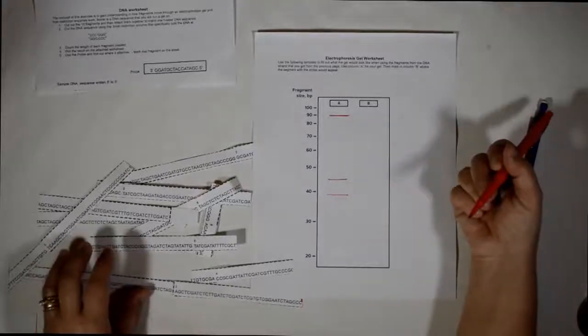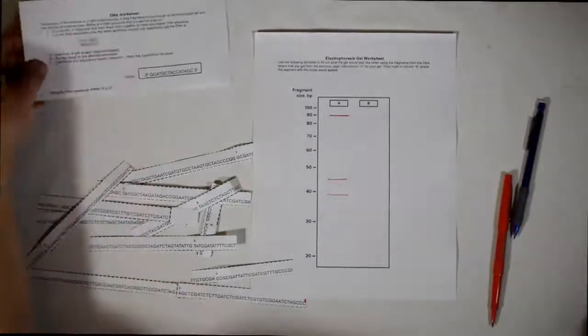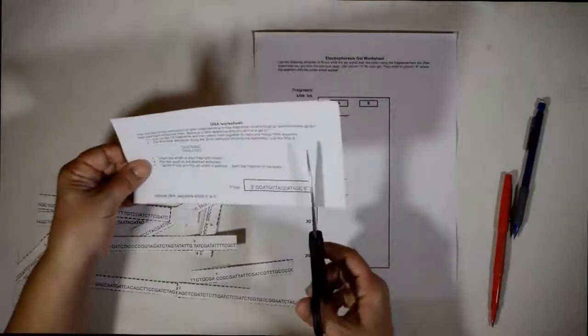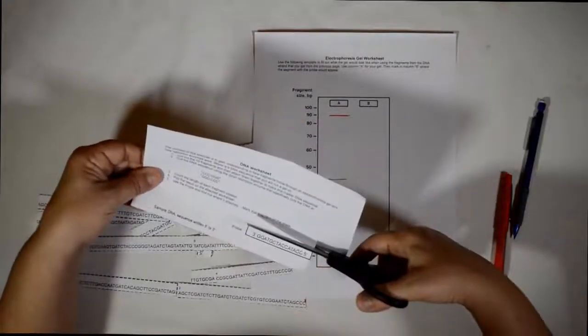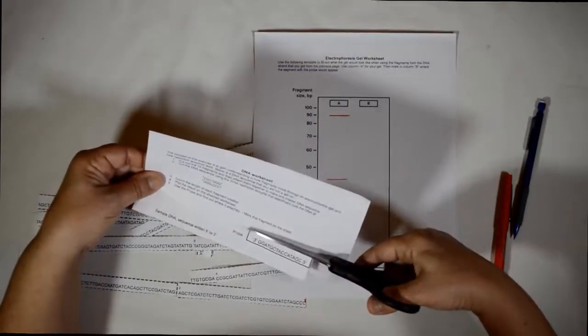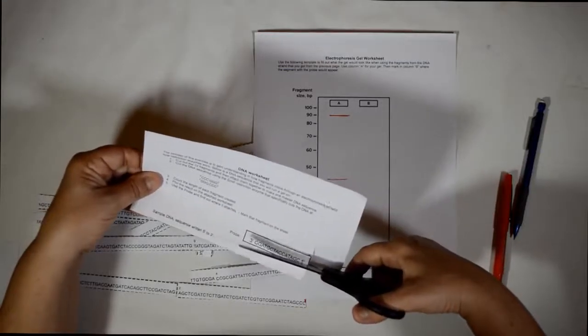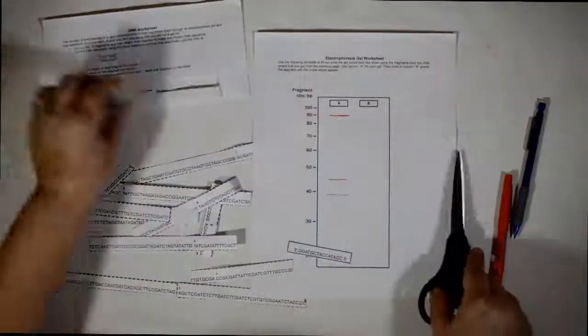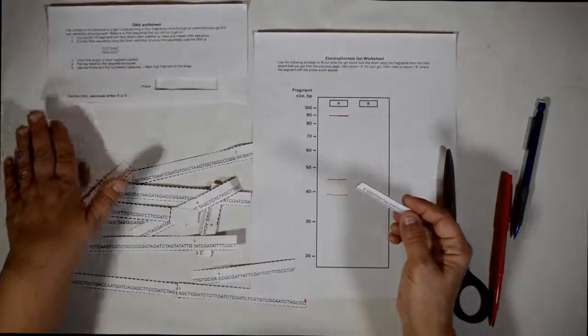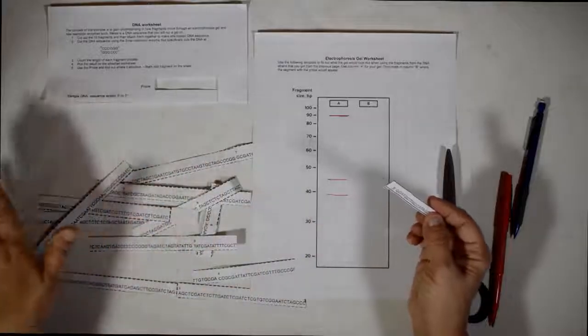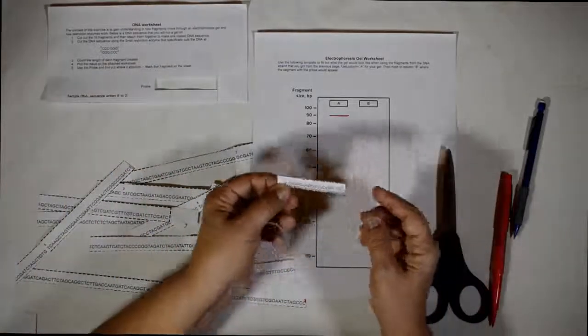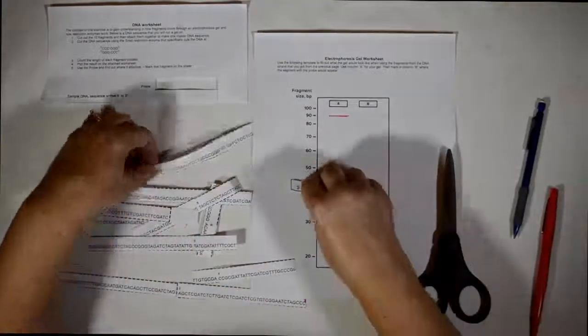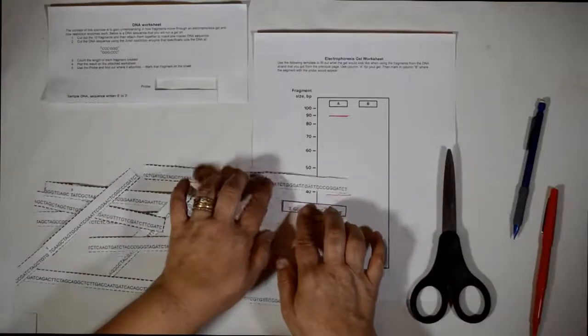Now, knowing you have the DNA sequence, the master DNA sequence, you have a probe that you can attach to recognize that site that you're looking for. And when you're using a probe, knowing that the DNA sequence was written from five to three, this one is three to five.